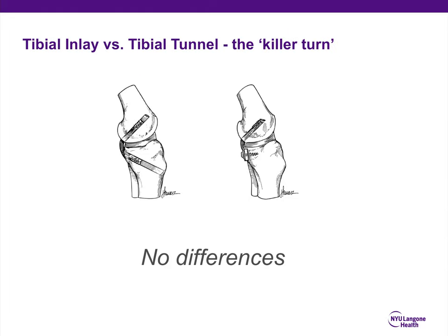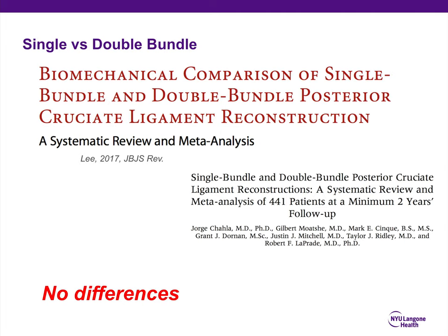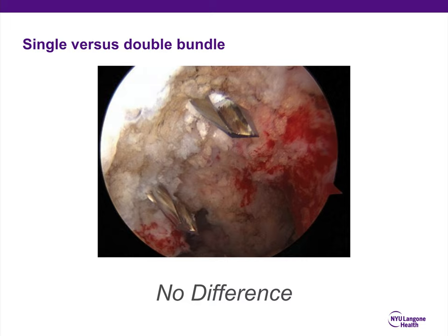In terms of clinical outcomes after PCL reconstruction, they are generally favorable. An often-tested point is tibial inlay versus tibial tunnel — whether it's a complete tunnel through the tibia or a blind-ending tunnel — and we find no differences between the two. Single versus double bundle: biomechanical studies and a systematic review and meta-analysis from a couple of years ago show no differences. Clinically, single versus double bundle also shows no difference.